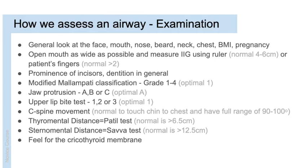Assess cervical spine movement: ask the patient to touch their chin to their chest, then fully extend and look up. They should have a full range of movement of about 90 to 100 degrees. Then measure thyromental distance: with the patient in neck extension, measure from the mental prominence to the thyroid cartilage — normal is greater than six and a half centimetres. Then measure the sternomental distance from chin to the angle of Louis — the SAVA test — normal is greater than 12 and a half centimetres.